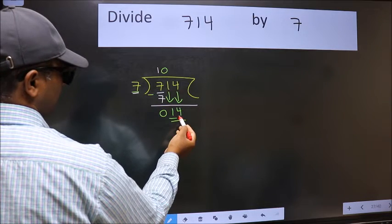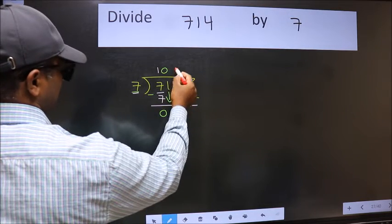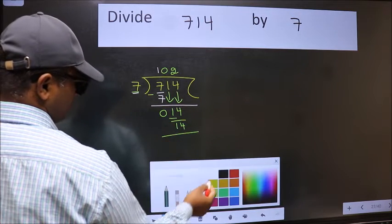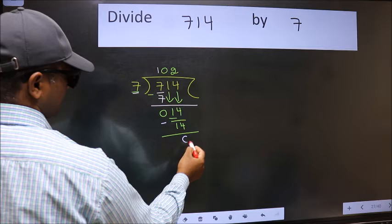Now 14. When do we get 14 in 7 table? 7 twos 14. Now we should subtract. We get 0.